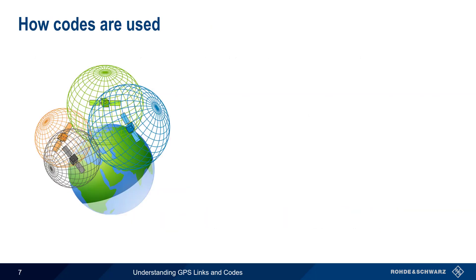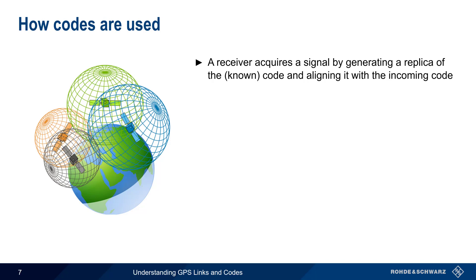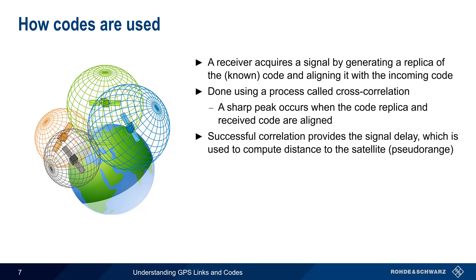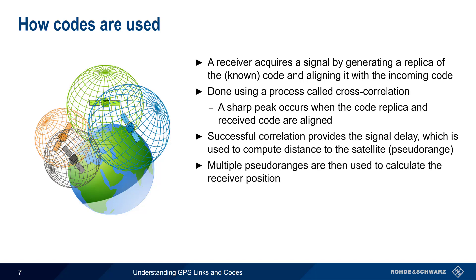How are codes used? A GPS receiver acquires a satellite or code by generating a local replica of each known code and then aligning it with the incoming code. This is done through a process called cross-correlation, and a sharp peak will occur when the received code and the local replica are aligned. Successful correlation provides the signal delay, which can then be used to calculate the distance, or more properly the pseudorange, to each satellite. With multiple pseudoranges, the receiver can then calculate its position.